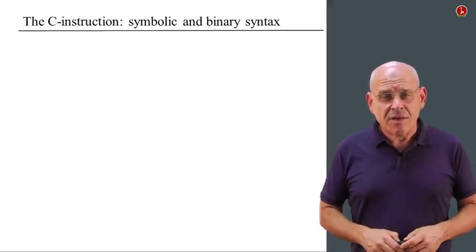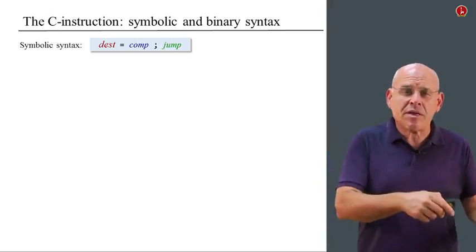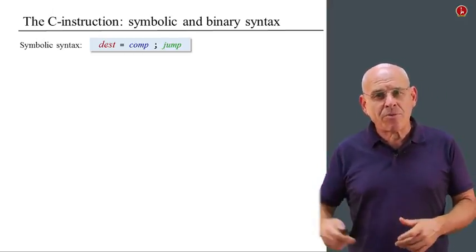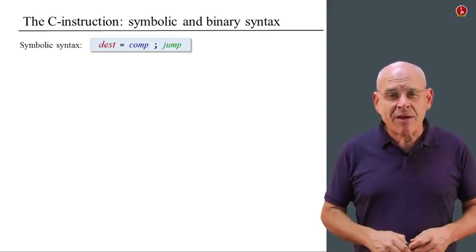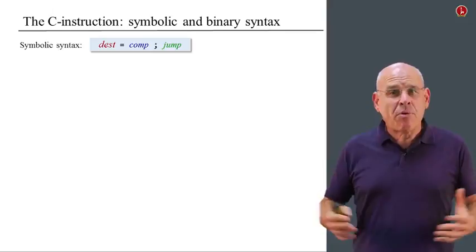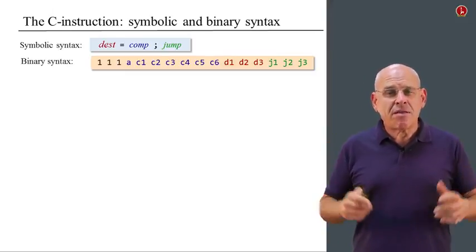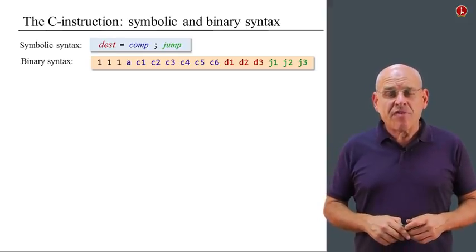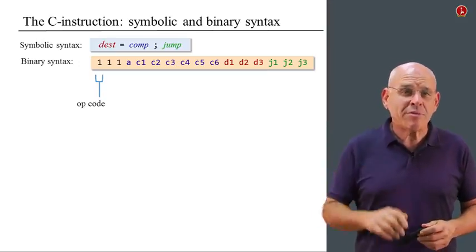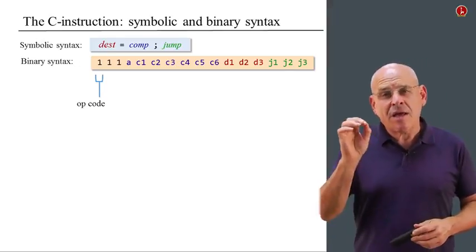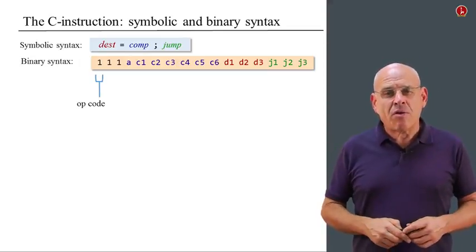What about the C instruction? The symbolic definition is very user friendly. We have a computation which we can store in a certain destination, and we have an optional jump directive. If we want to express it in binary, then we have to decide on some agreed upon codes. Here is the 16-bit specification of the same symbolic instruction. The first one is an opcode. It tells the computer that this is a C instruction. We have only two types of instruction, A instruction and C instruction, and that's why we need only one bit to represent the opcode, which is either 0 or 1.